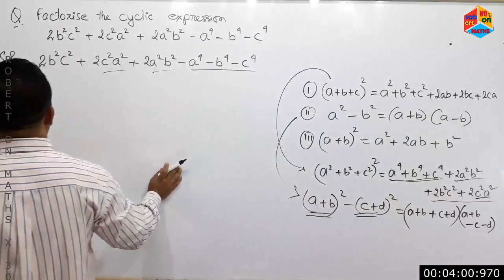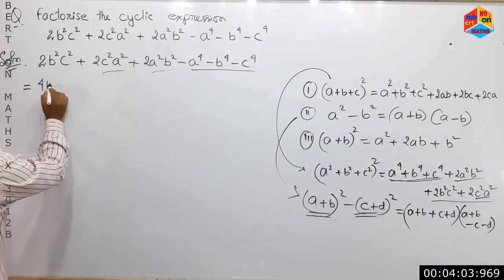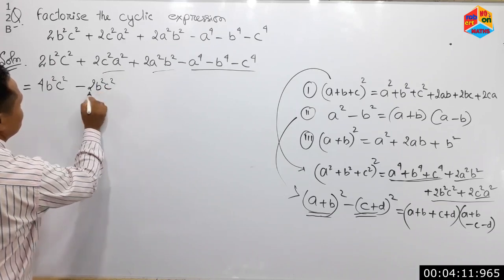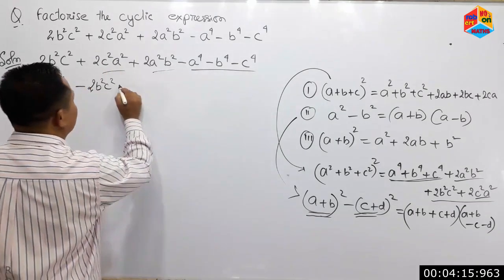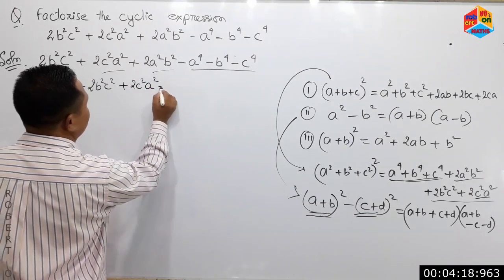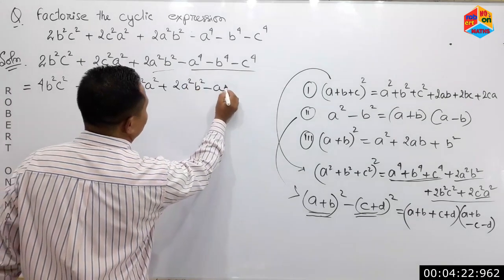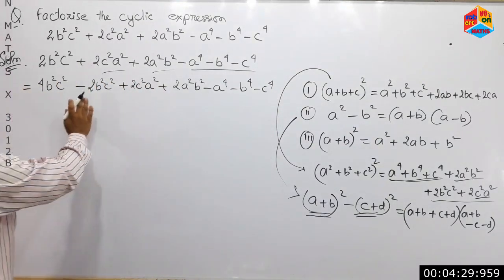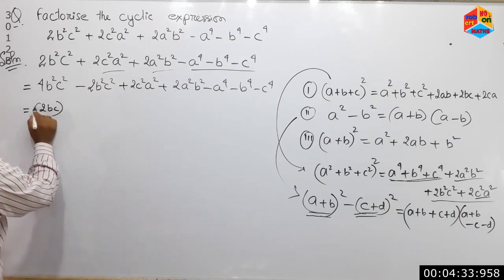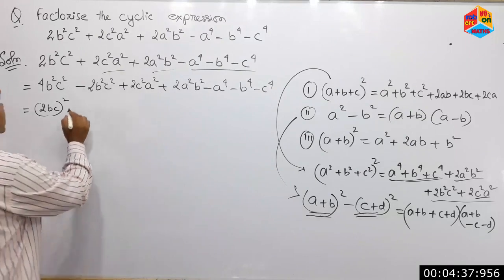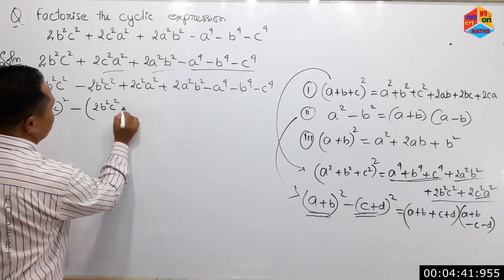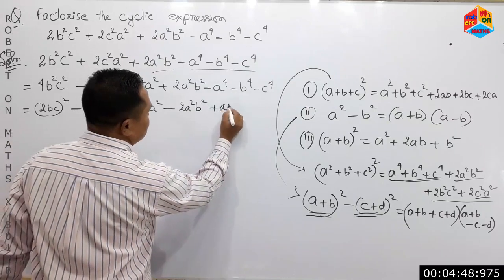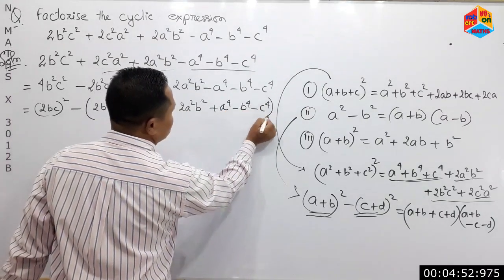A minus b is c. A minus c squared, a squared plus twice a squared b squared, minus a to the power 4, minus b to the power 4, minus c to the power 4.